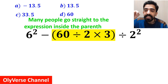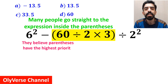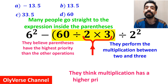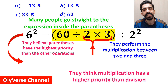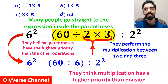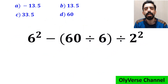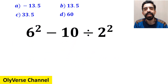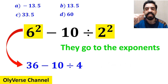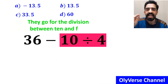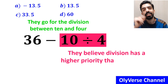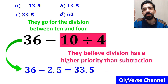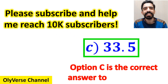Many people go straight to the expression inside the parenthesis because they believe parenthesis have a higher priority than other operations, and they immediately perform the multiplication between 2 and 3, thinking multiplication has a higher priority than division. So they simplify to 6 squared minus 60 divided by 6, then divided by 2 squared. Next they divide 60 by 6 to get 6 squared minus 10 divided by 2 squared, then simplify the exponents to 36 minus 10 divided by 4. Finally, they divide 10 by 4, writing 36 minus 2.5, which gives them 33.5. They quickly say option C is the correct answer.